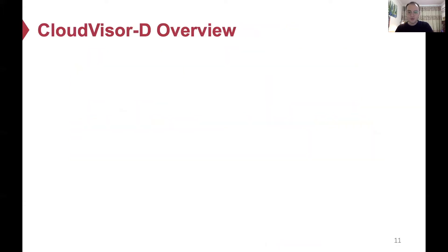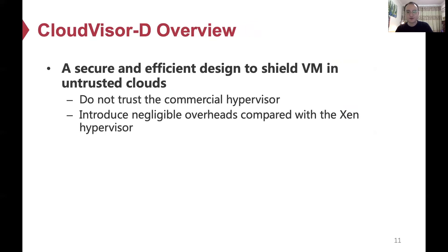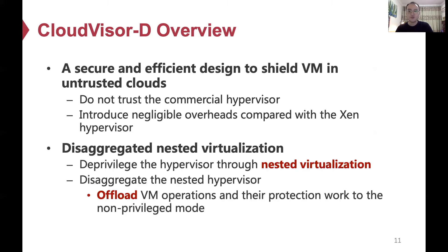To address the performance issue without compromising security, I will introduce CloudVisor-D, a secure and efficient design to shield virtual machines in untrusted clouds. CloudVisor-D still distrusts the commercial hypervisor and deprivileges it through nested virtualization. To boost the performance of virtual machine operations, we offload most VM operations and their protection work to non-privileged mode.